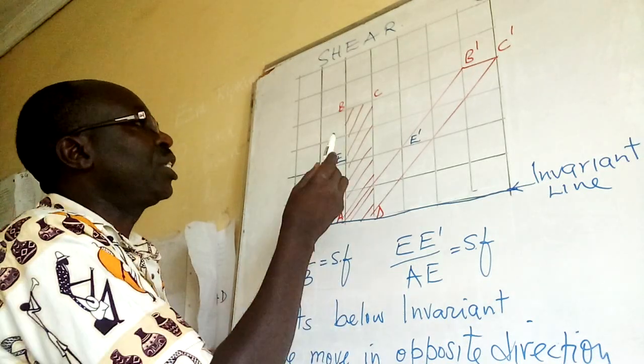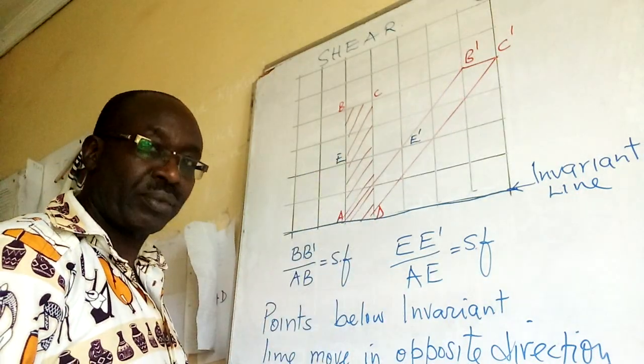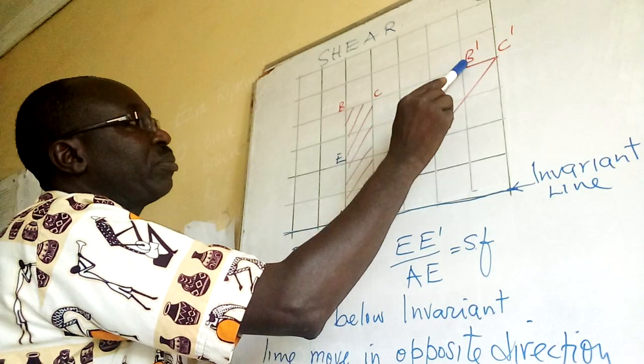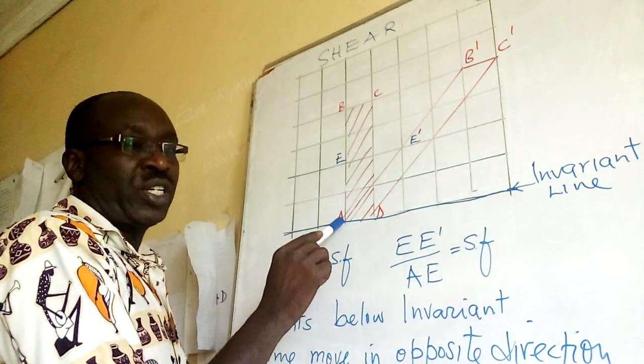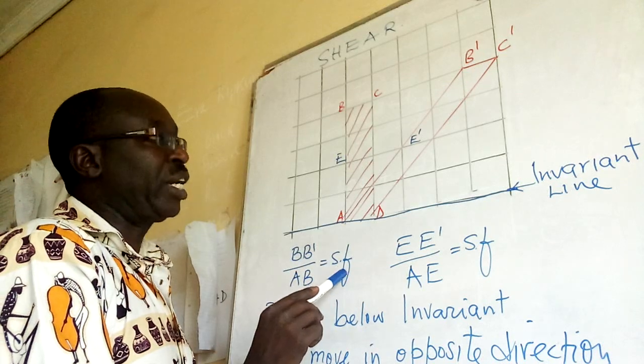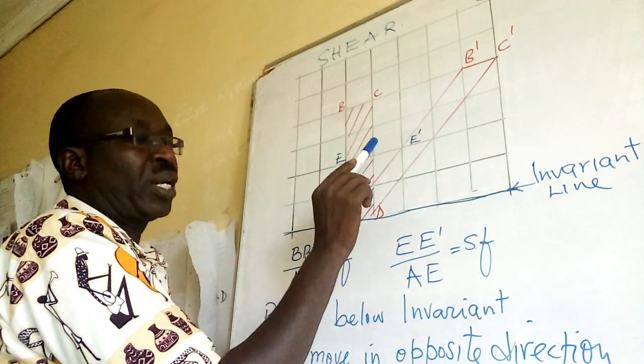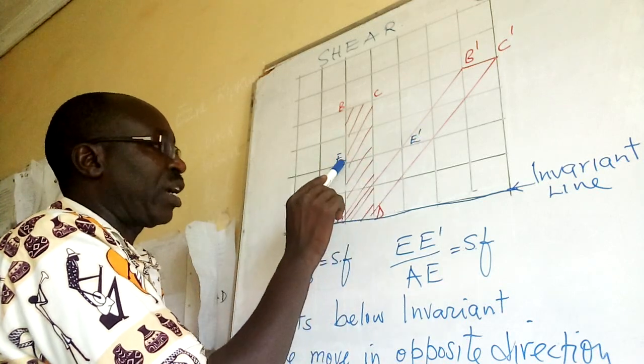So in this case, B to B prime, if I divide that movement over the vertical distance AB, then you get scale factor. Similarly, if this point E moved to E prime, so this movement when you divide by...